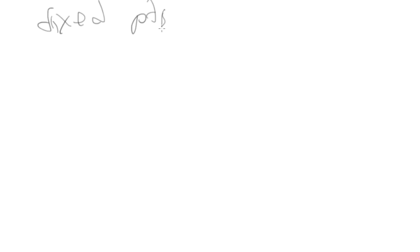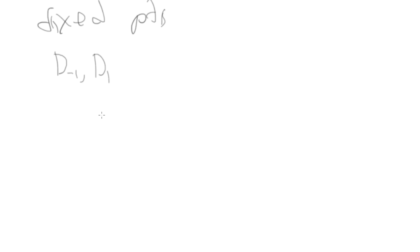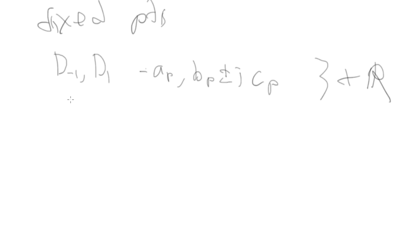The fixed points of the system — solved by setting the previous equations to zero — are in regions D-1 and D1, which have eigenvalues of negative Ap plus or minus iCp, where these are all positive real numbers. In the region between them, D0, the eigenvalues are B-naught plus iC-naught. The same structure extends over to the other side.